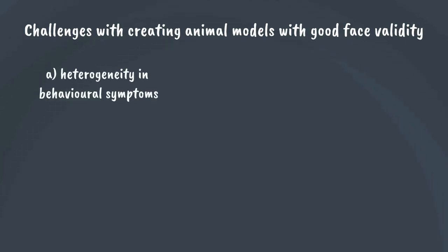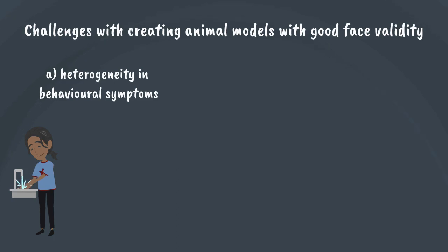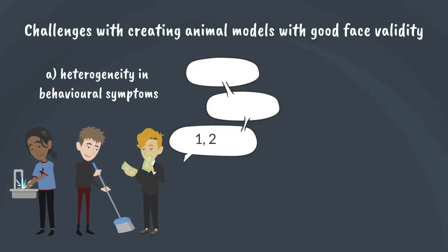Some challenges with creating animal models with good face validity are that in some diseases there is heterogeneity in behavioural symptoms — not all patients will present with the same behavioural features. For example, obsessive compulsive disorder manifests in different ways depending on the patient, making it difficult to have one animal model that fully recapitulates the human disease features.